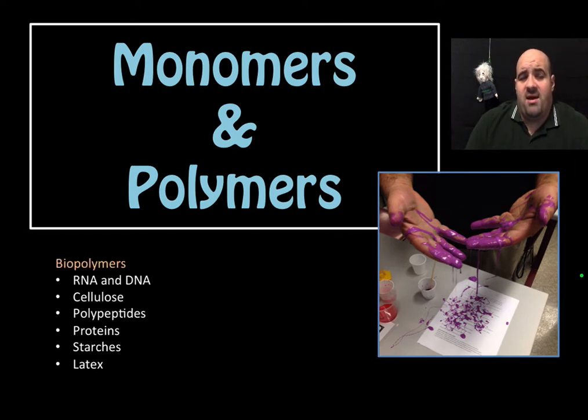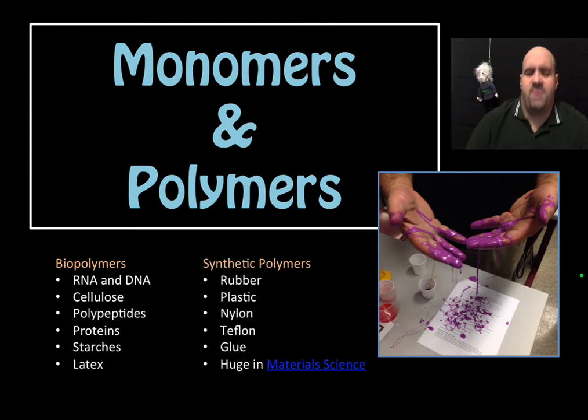If we think about it, we didn't really define what they are yet, but I just want to point out there are biopolymers: RNA and DNA. Those are polymers. Those are long molecular chains, so that alone makes monomers and polymers very important because we know how important RNA and DNA are. Cellulose, polypeptides, proteins, starches, and latex also fall under the class of biopolymers.